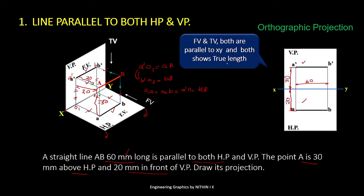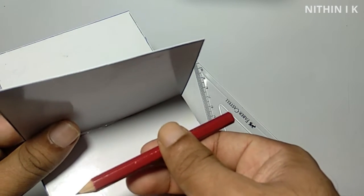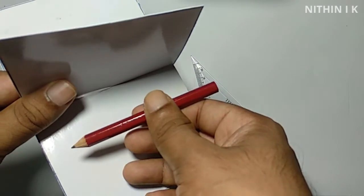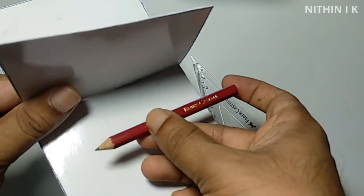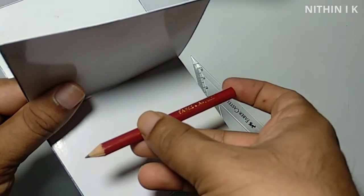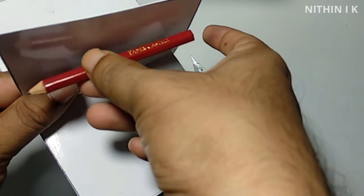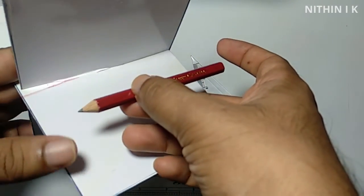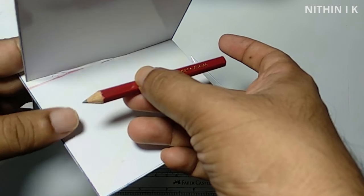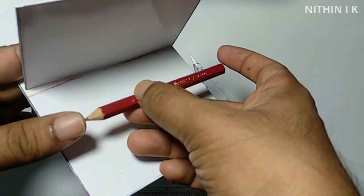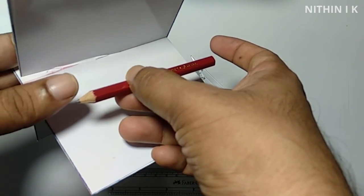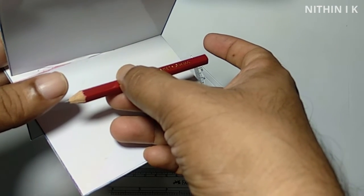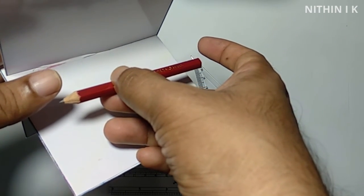Now we will solve a problem manually. Question: A straight line AB, 60mm long, is parallel to both HP and VP. The point A is 30mm above HP and 20mm in front of VP. Draw its projections.